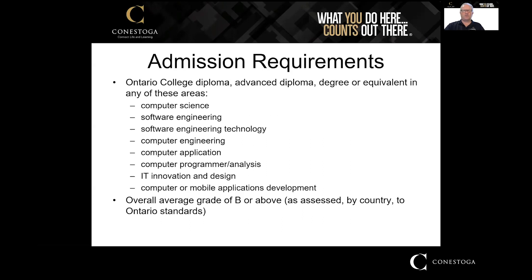The admission requirements are some sort of a diploma, advanced diploma, degree, or equivalent standing in any of the areas related to computer science. Since this is considered a graduate program, you must have one of these undergraduate diplomas, certificates, or degrees in order to be accepted. You also need an average grade of B or above based on Ontario standards.